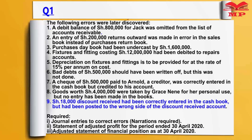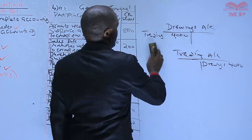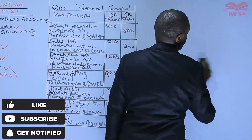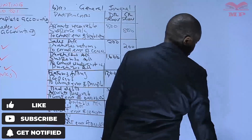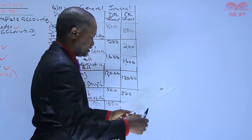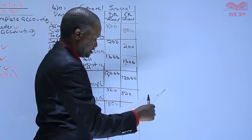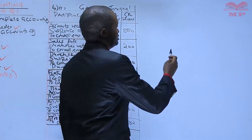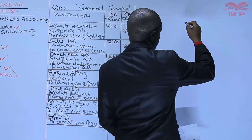Number nine: eighteen thousand discount received had been correctly entered in the cash book but had been posted to the wrong side of the discount received account. This error will not affect the cash book, but it will affect the discount received account.